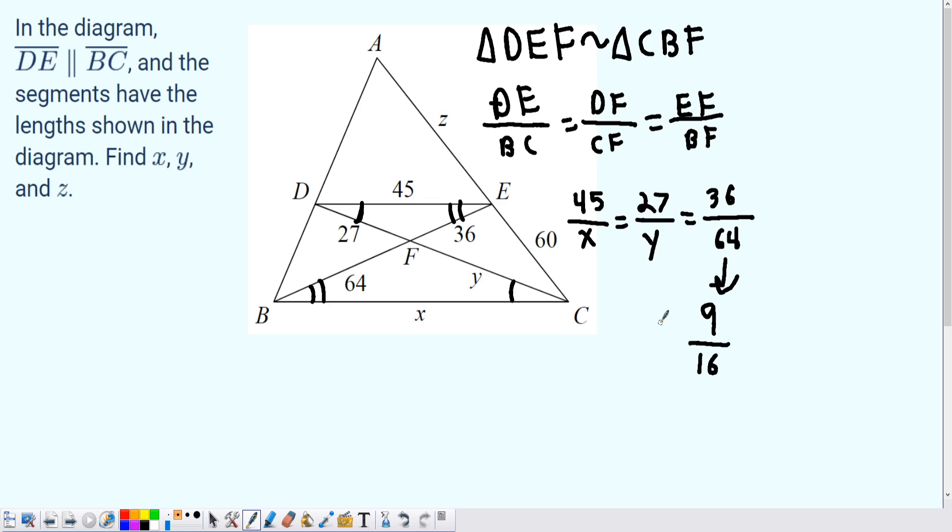So what can we do from there? Well, we can now solve for at least one of the variables, x or y. I'm going to start with y. So we got 27 over y. I will multiply by y on both sides to get that 27 is equivalent to 9/16 y.